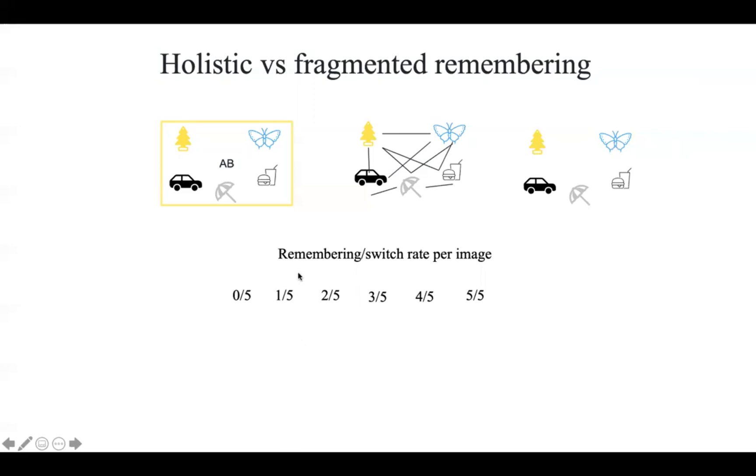Our hypothesis is that if we calculate the remembering and switching rate for each picture, and if the participants actually remember all the details in a holistic way, that is to say, well, zero of the five or one of the five of the picture will be remembered or switched, or it will be four out of five or all five details will be remembered or switched. So more closer to all and none situation.